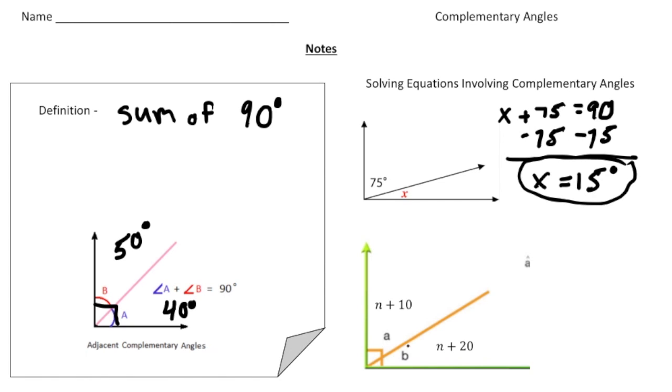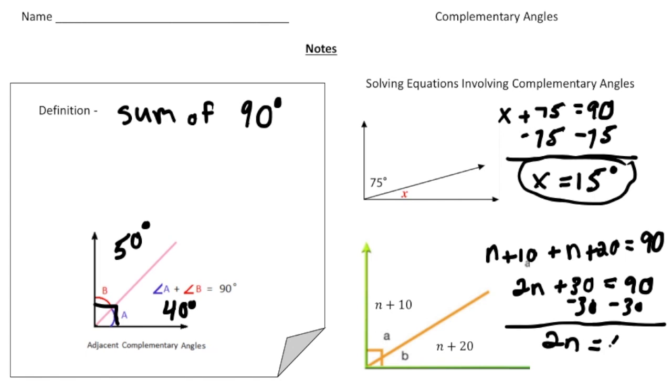The second one is a little more complicated. We know the first angle is n plus 10 and the second one is n plus 20. So our equation is going to be n plus 10 plus n plus 20 equals 90 degrees. Now we've got to simplify the left-hand side. So n plus n is 2n. And then 10 plus 20 is 30. And together they equal 90 degrees. And then take away 30 from both sides. And now we get 2n equals 60. And then divide both sides by 2. Which leaves us with n equals 30.